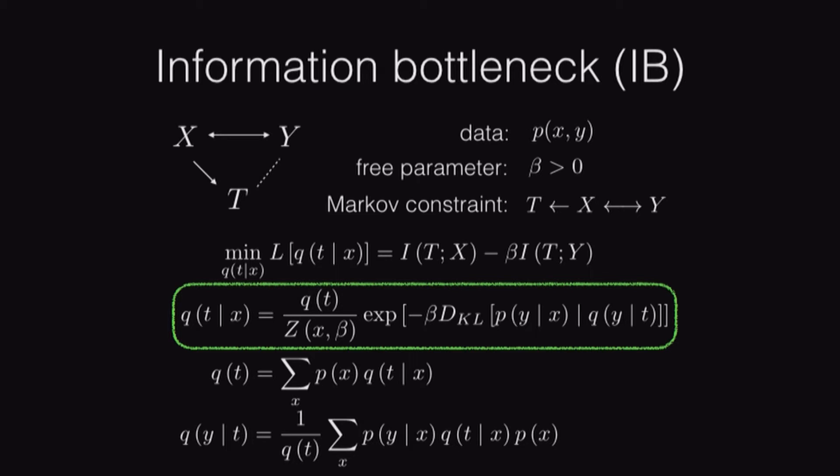We can understand this by thinking about the clustering approach. The conditional probability of T given X asks, with which probability will we map data point X to cluster T? To answer that question, we compare two distributions, the conditional distribution of Y given X and Y given T. So we're asking, do data point X and cluster T we're considering mapping it to say the same thing about the relevance variable Y? If they do, this similarity measure between those distributions, the KL divergence, will be small, that exponential will be large, and we're likely to map that data point to that cluster. If those are very different, if the proposed cluster says very different things about Y, that KL divergence will be large, the exponential will be small, and we're not going to map that data point to that cluster.